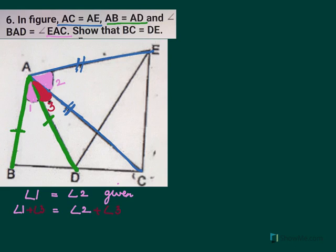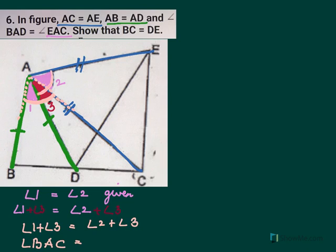Adding angle 3 on both sides. Now when I add, I get angle 1 plus angle 3 equal to angle 2 plus angle 3. But what is angle 1 plus 3? Angle 1 plus 3 is this entire angle. That is angle BAC will be equal to, what is 2 plus 3?